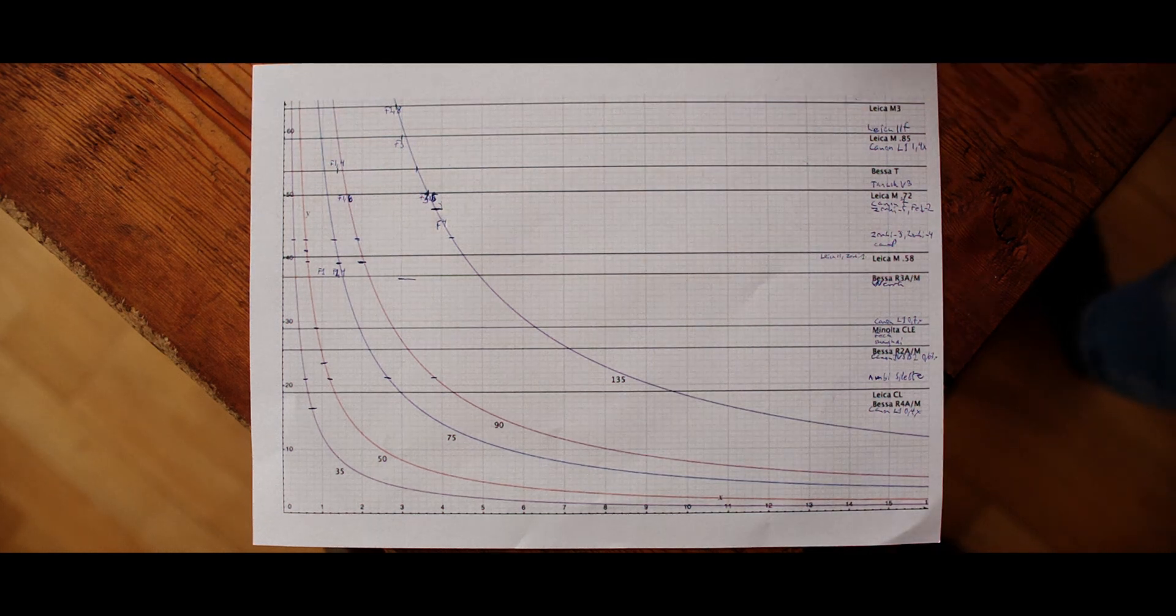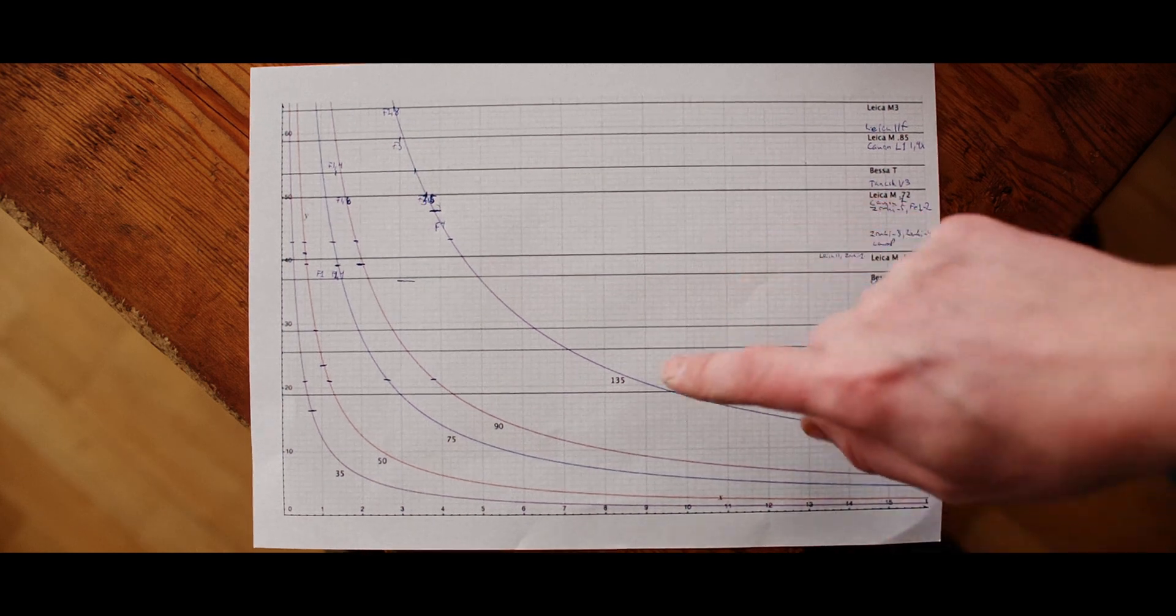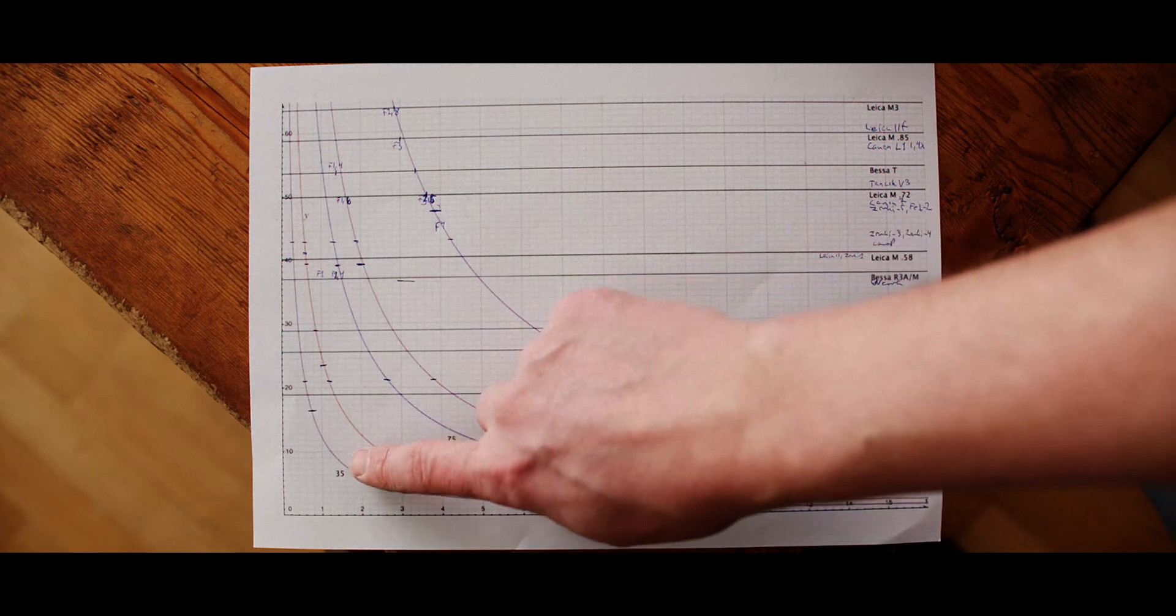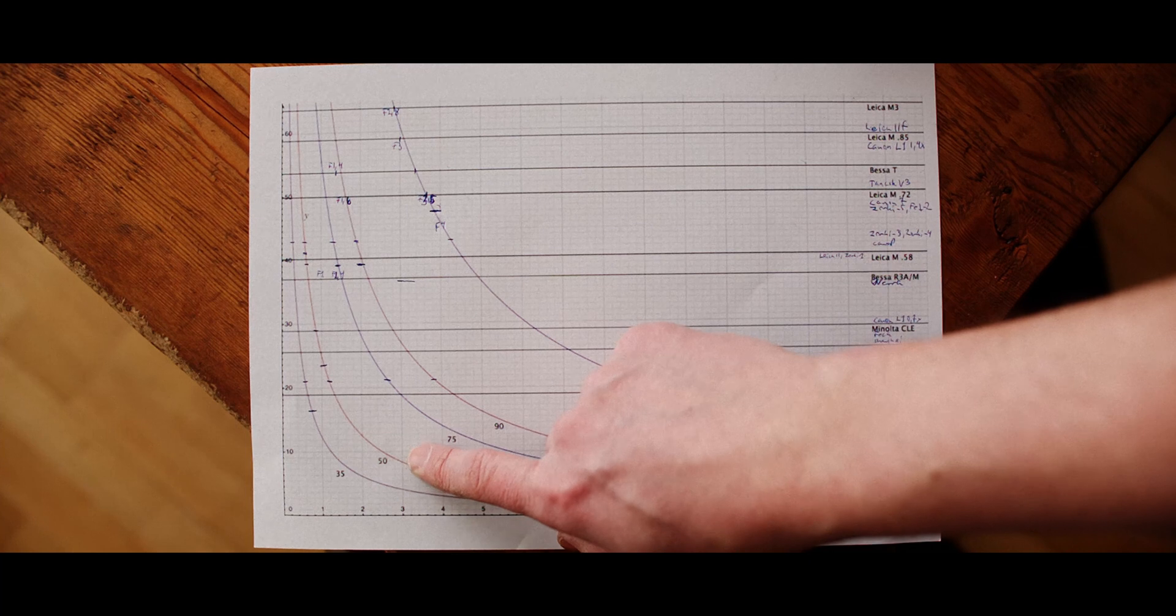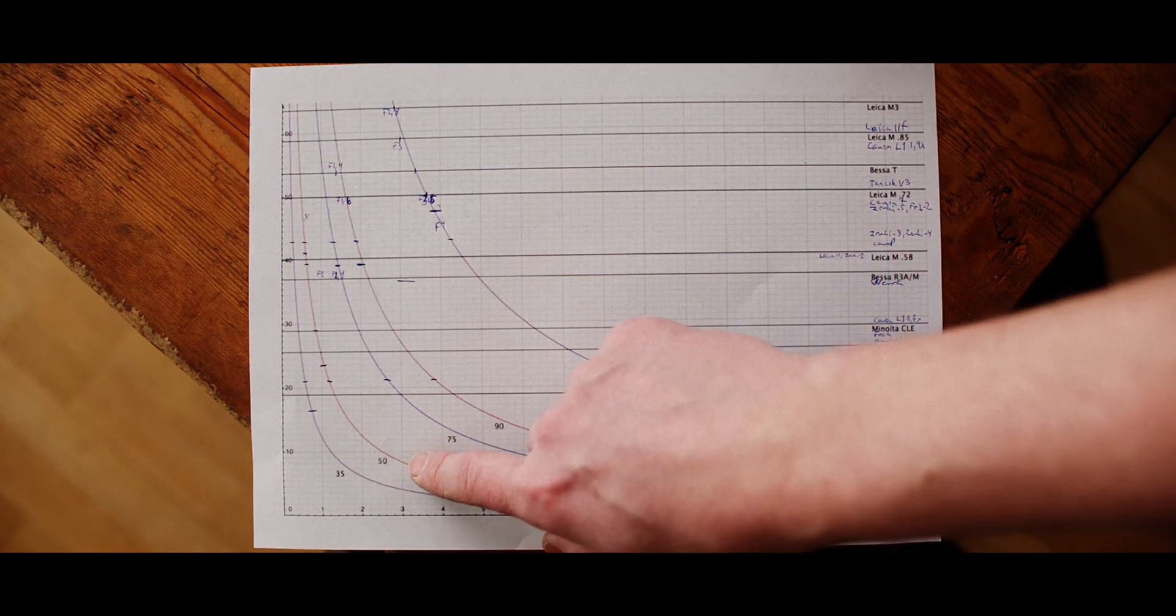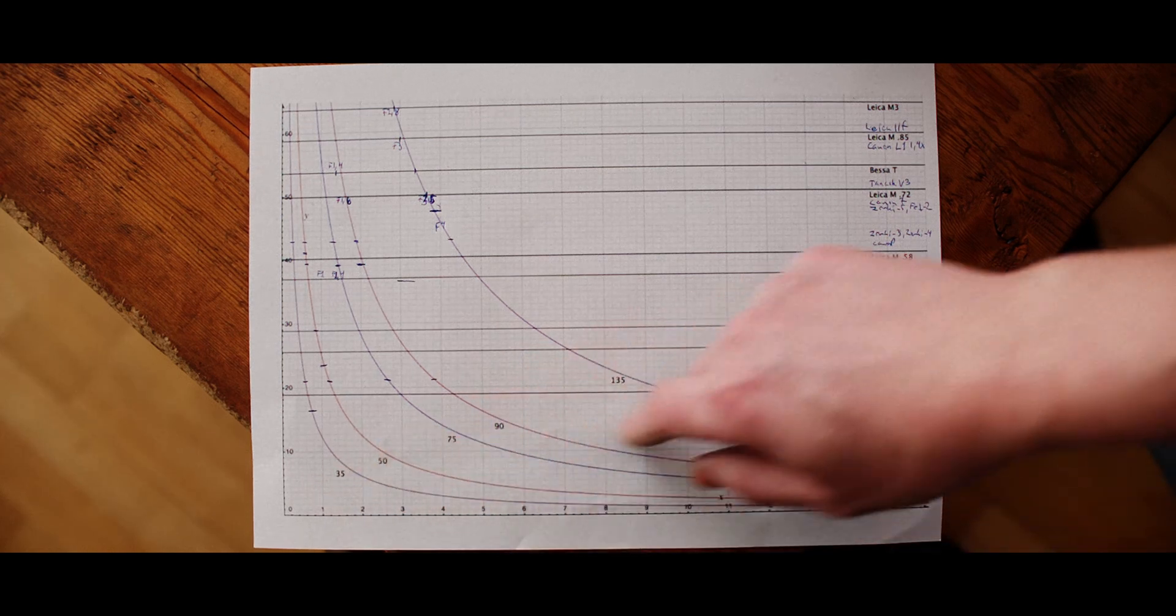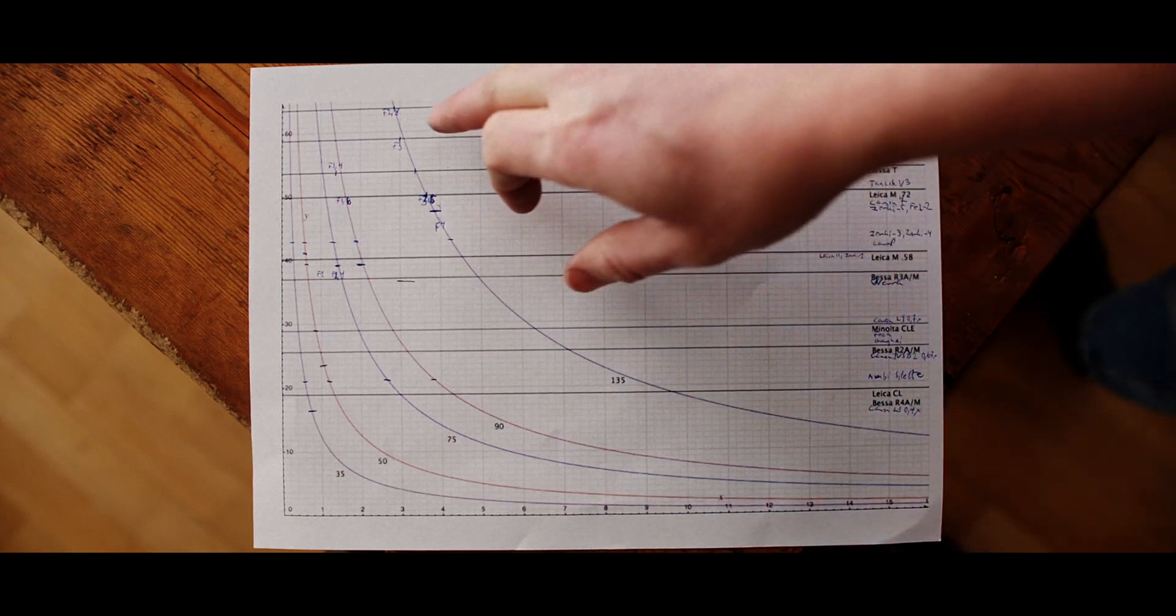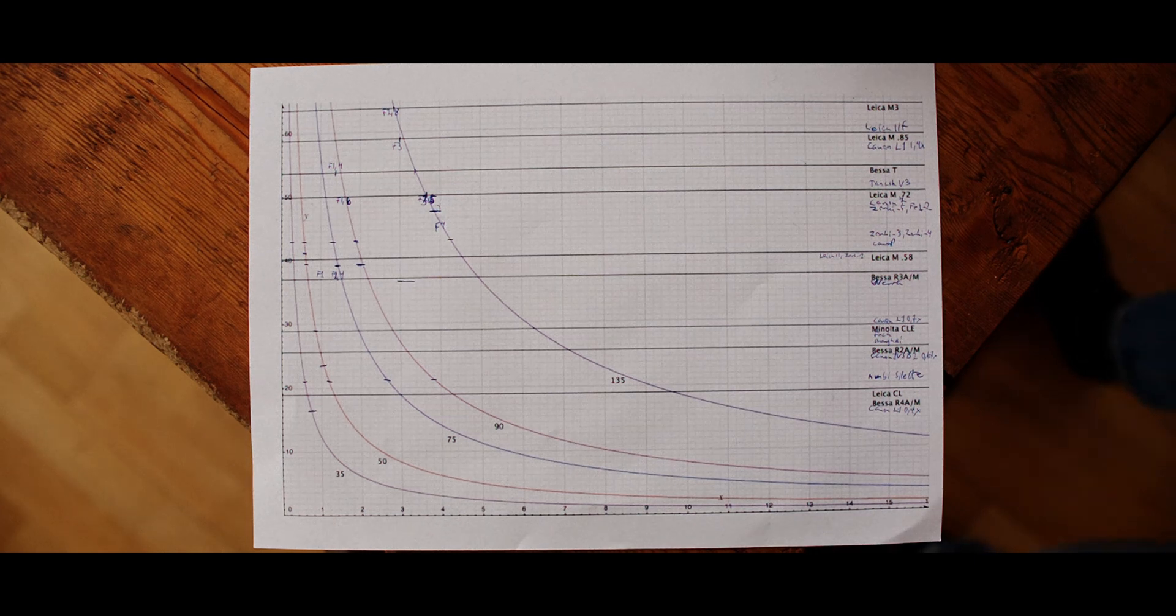Anyhow I think this is mostly a description on why rangefinder cameras are not really suited for long lenses. They are very good at focusing wide-angle lenses, which you know SLRs really are not. Because it's so difficult to see the depth of field. Rangefinder cameras are super wide-angle lenses. But as you go longer it really gets problematic.